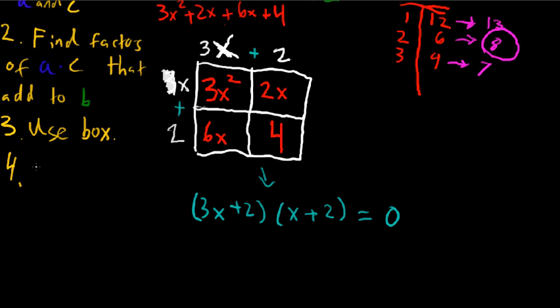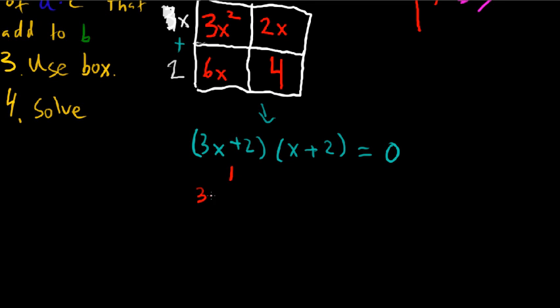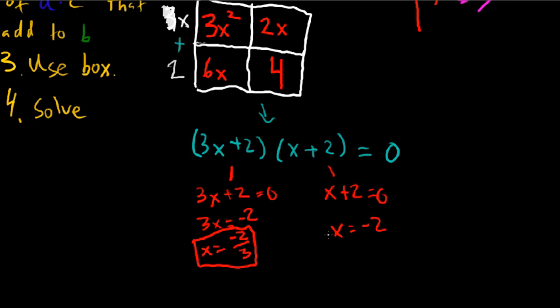All right, once you do that, the final step is to solve. So like I said earlier, we're going to use the 0 product property and set each factor equal to 0. So let's do this one first. 3x plus 2 equals 0. 3x equals negative 2. x is negative 2 thirds. Okay, there you go. That's going to be one of our answers. The other one, x plus 2. This will be a little bit easier. x plus 2 equals 0. x is negative 2. Okay, there you go. We found the solutions to our quadratic equation by factoring.